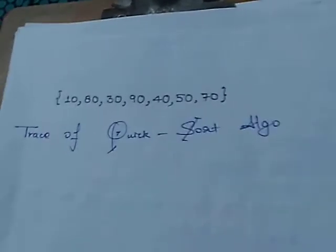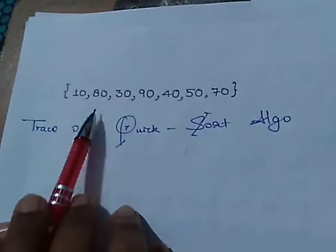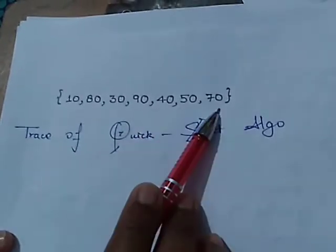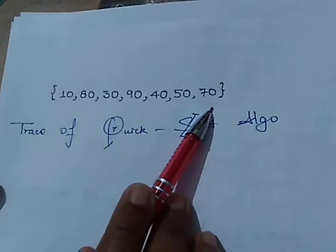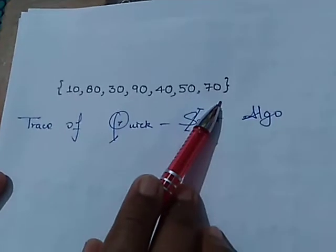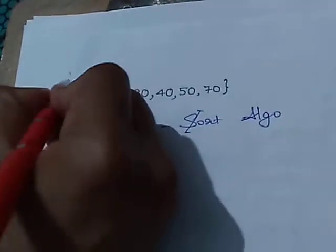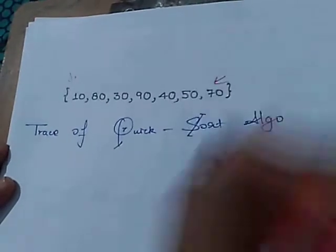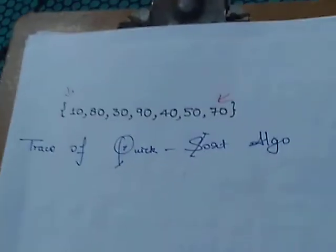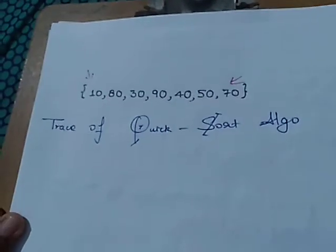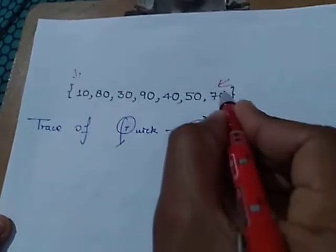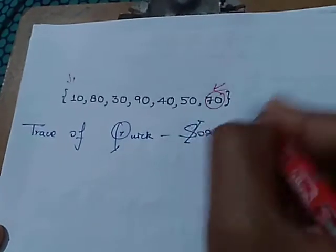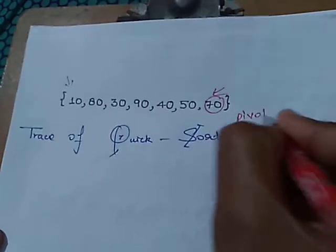Now let us take an example of an array consisting of seven elements. So first what we have to do: we have to take a pivot element either on the left-hand side or on the right-hand side. So now in this we have chosen 70 as a pivot element.